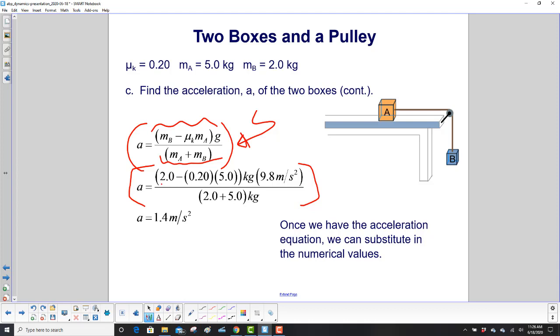We have the mass of b minus the coefficient of friction, which is unitless, times the mass, which is in kilograms. And there's your kilograms. Then you have your acceleration g due to gravity on the right. And then on the bottom, we add the two masses and we have kilograms again. And you can note, please, that the kilograms cancel out and we get an acceleration of 1.4 meters per second squared.